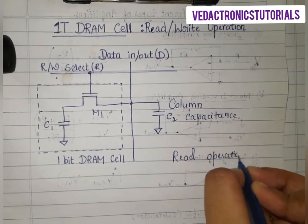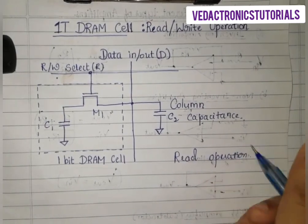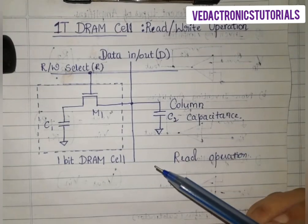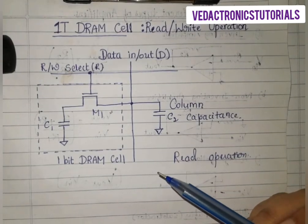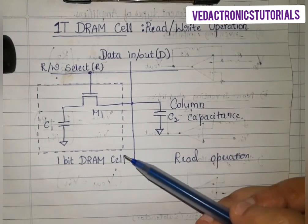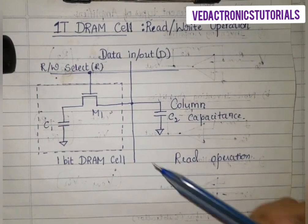In this case, the storage capacitor C1 discharges through the access transistor.